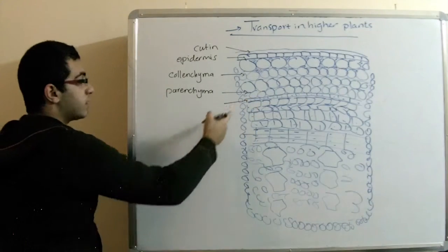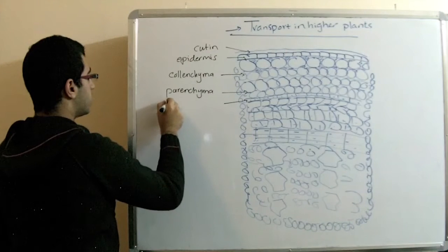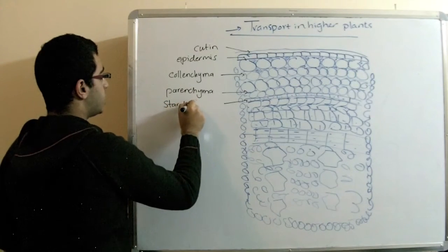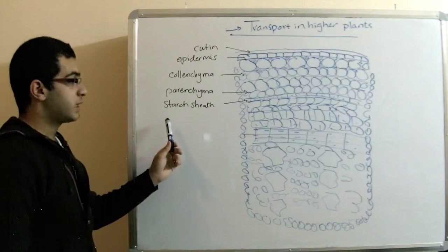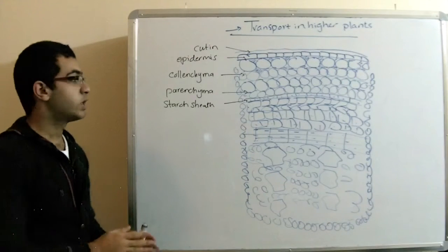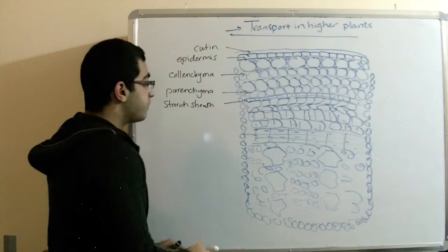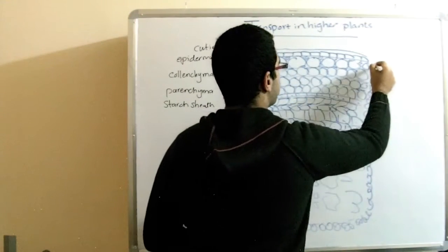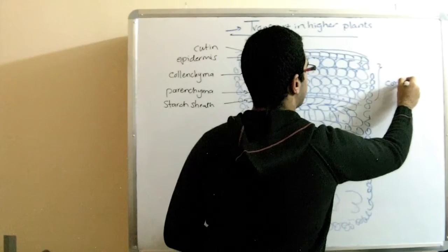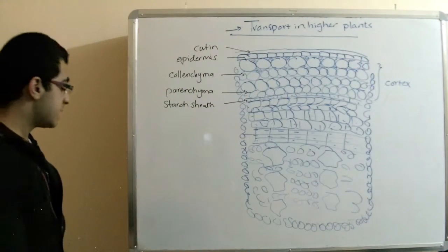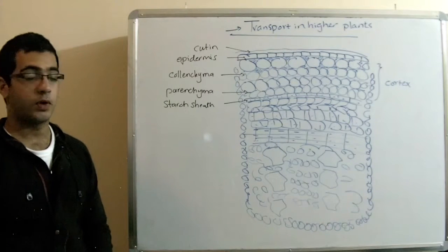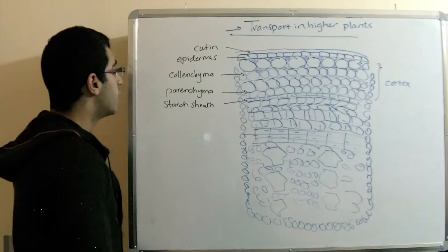And the next thin layer here is called the starch sheath. And depending on its name, it's used for the storage of starch. And these three layers collectively are called the cortex of the plant. So, this layer doesn't have anything to do with the transport. But the next do.